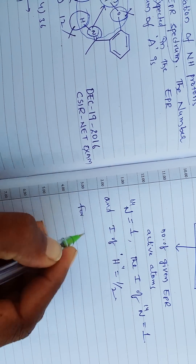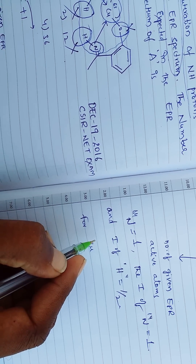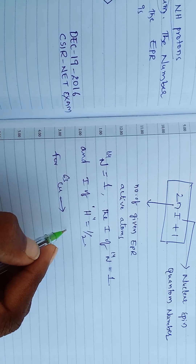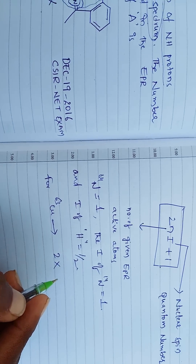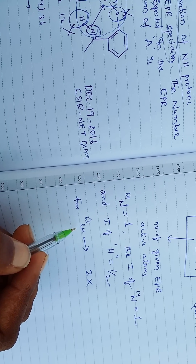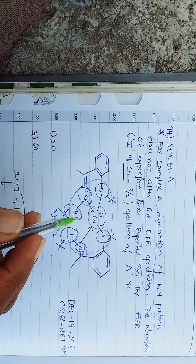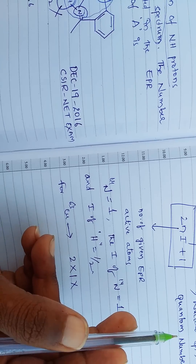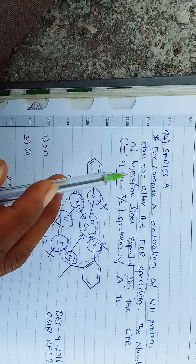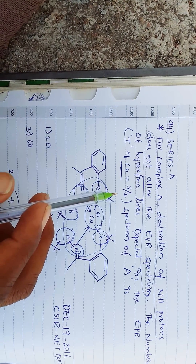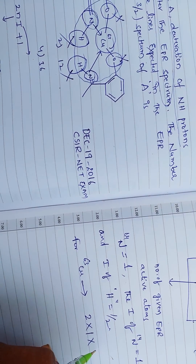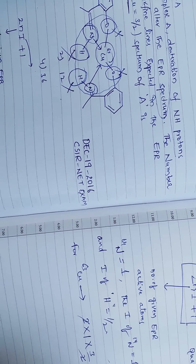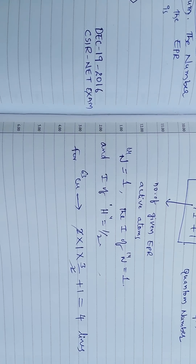First, for copper-63: applying the formula 2NI + 1, N equals 1 (only one copper in the complex), and I of copper equals 3/2 (given in the question). So: 2 × 1 × (3/2) + 1 = 3 + 1 = 4 lines from the copper.